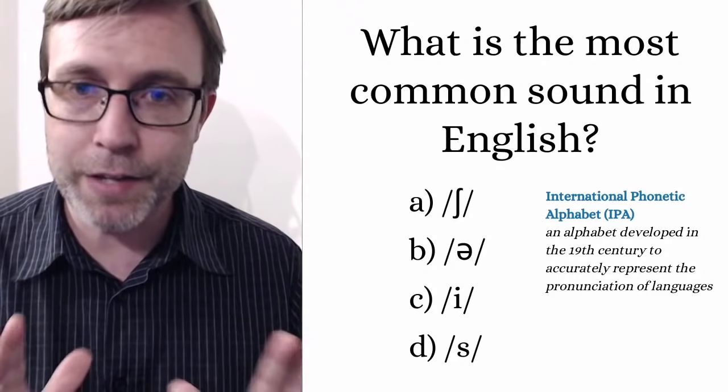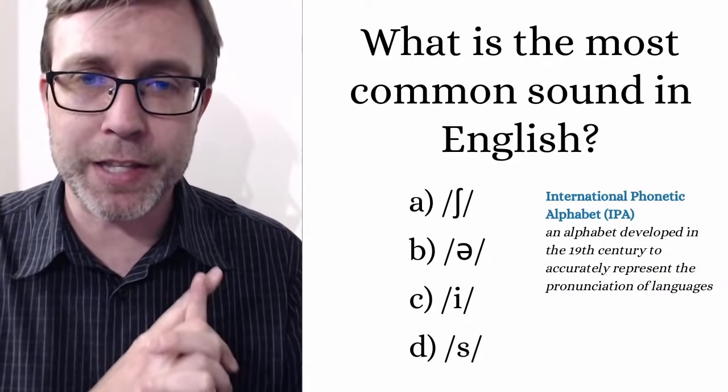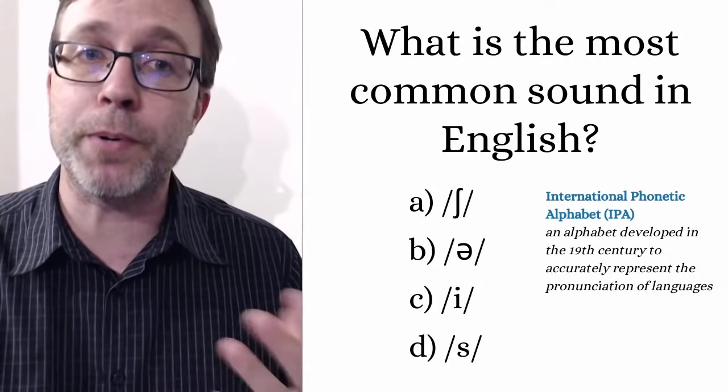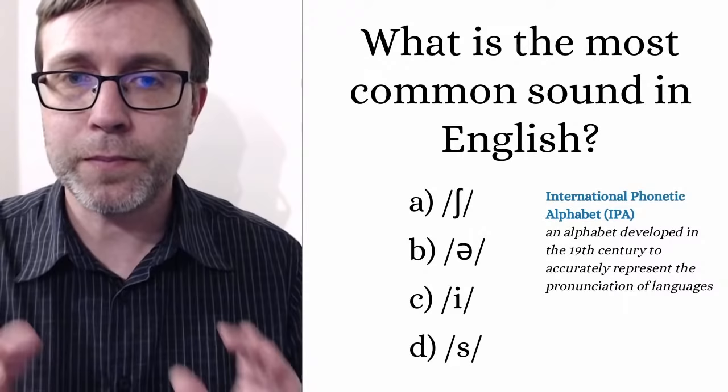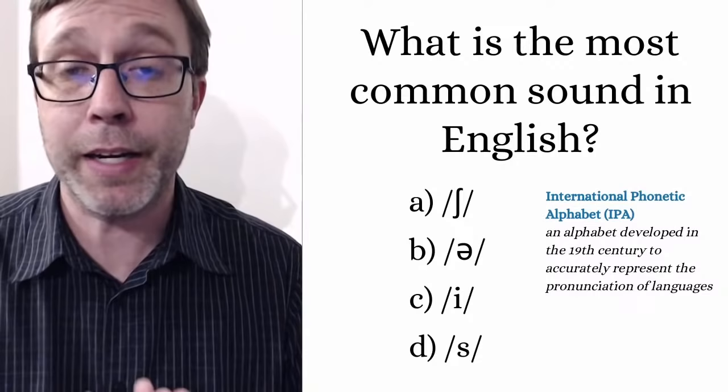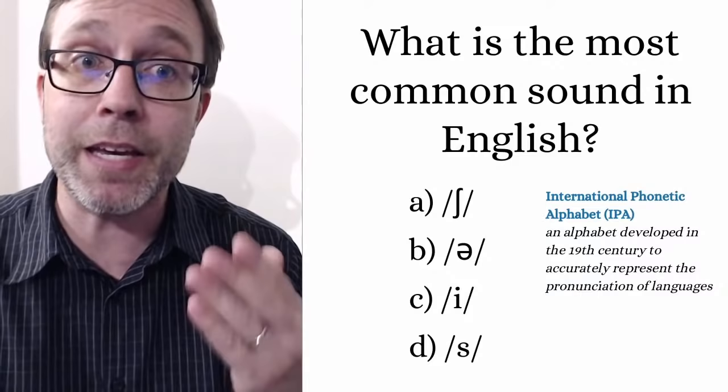If you're not sure what the IPA is, it's an alphabet developed in the 19th century to accurately represent the pronunciation of languages — so it's not just used in English. If you're using an online English dictionary and you look up a word and see the pronunciation, they may give you these symbols. That is the International Phonetic Alphabet, the IPA.